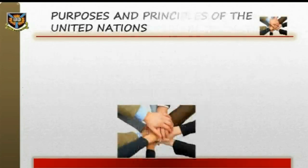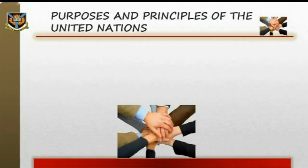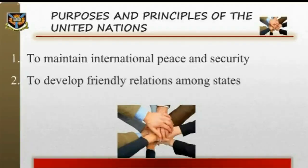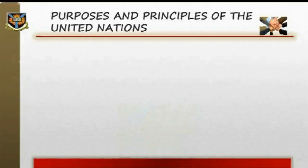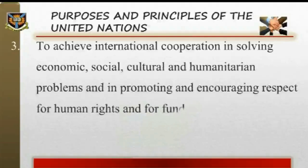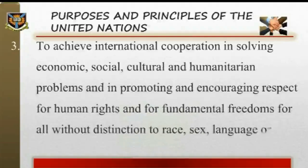Purposes and Principles of the United Nations. The purposes and principles of the United Nations are contained in Chapter 1, Articles 1 and 2 of its Charter. Article 1 contains the purposes: 1. To maintain international peace and security. 2. To develop friendly relations among states. 3. To achieve international cooperation in solving economic, social, cultural, and humanitarian problems, and in promoting and encouraging respect for human rights and for fundamental freedoms for all, without distinction to race, sex, language, or religion.